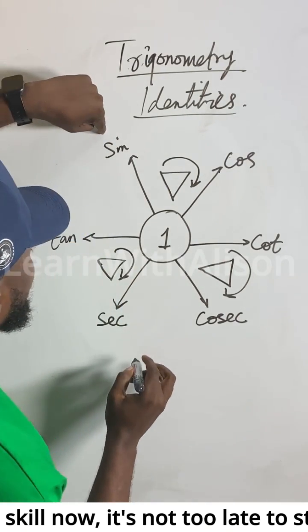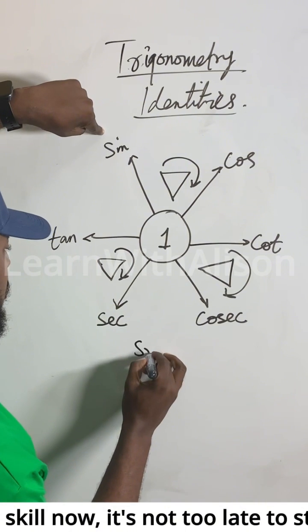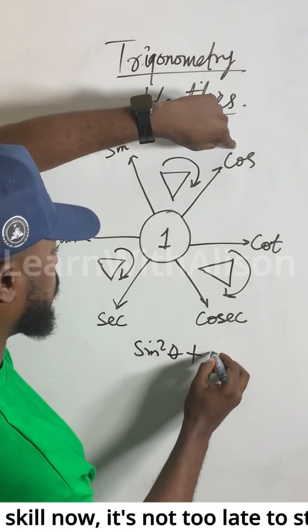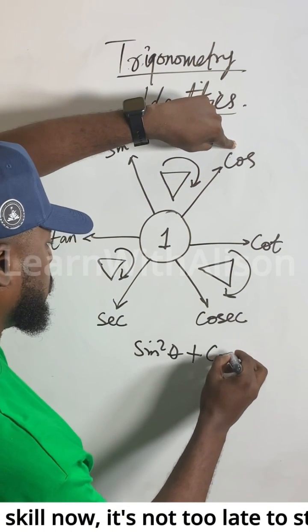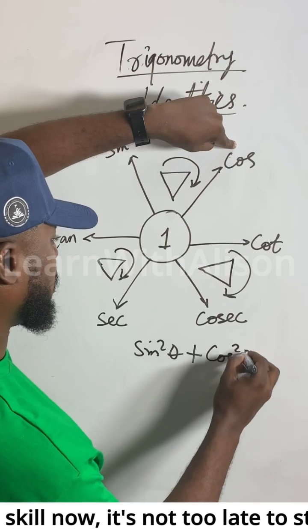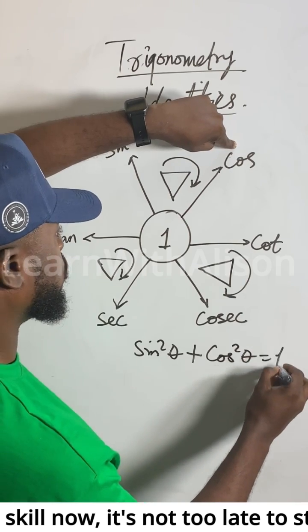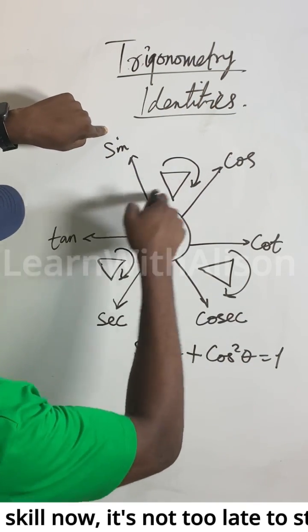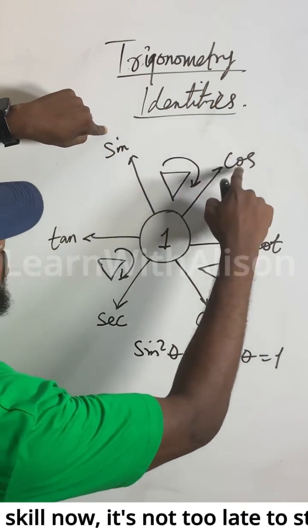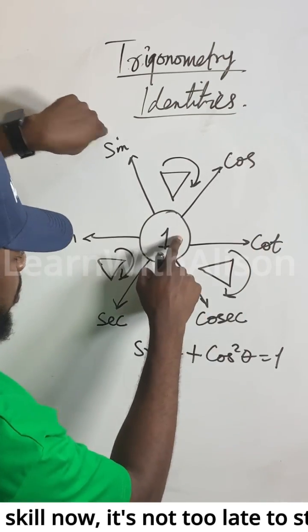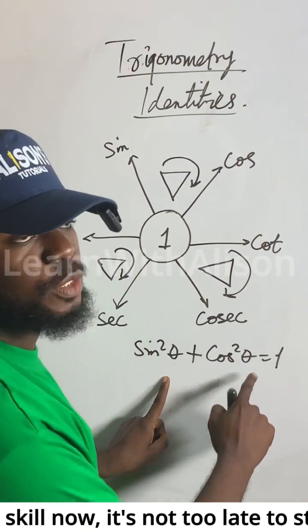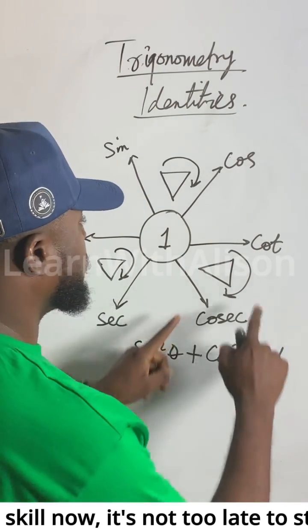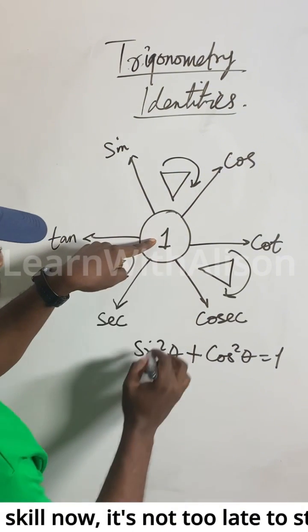Now look at it. The simple equation is: sin²θ + cos²θ = 1. Look at it — meaning this plus this will give you one. That's the first identity, and it's easy to remember.